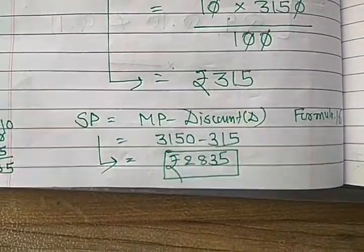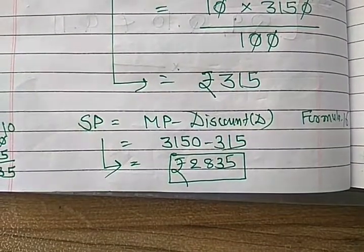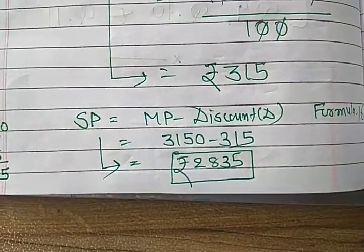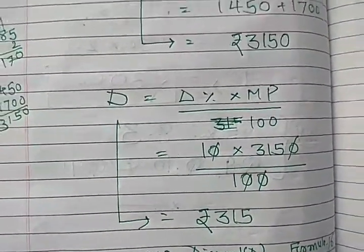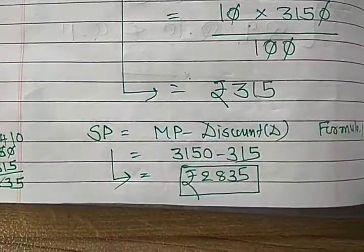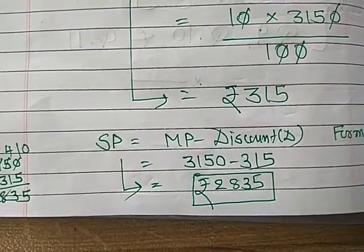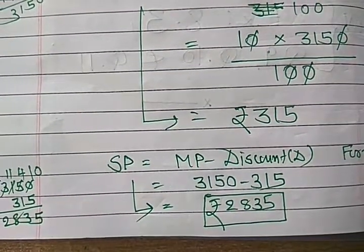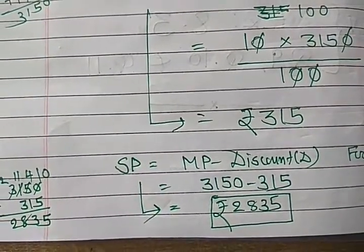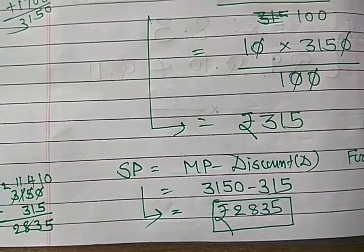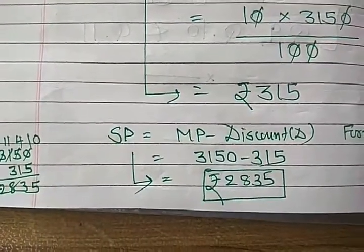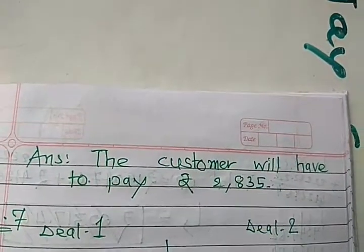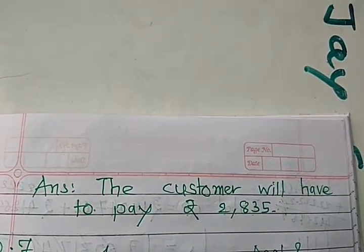Use this formula from our formula list and here you simplify you will get discount 315. Then next formula you have to find out SP. So SP is equal to MP minus D, that is formula number 16. So our MP 3,150 and our discount 315. So total we got 2,835 rupees SP. The customer will have to pay rupees 2,835.